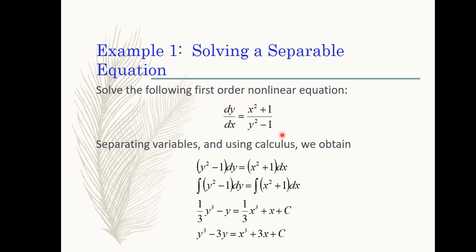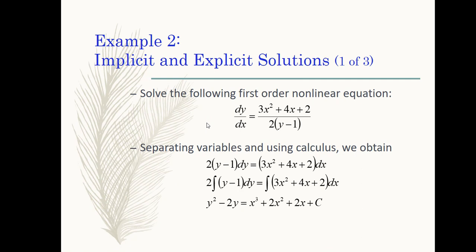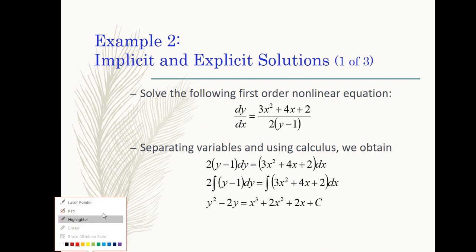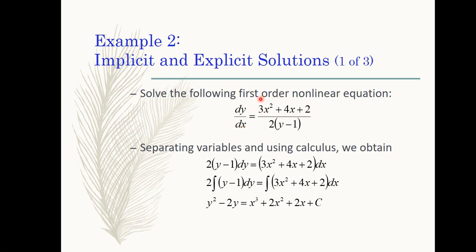The second example will not only give you another way of attacking a first-order separable differential equation, but also will present the concept of the implicit and the explicit solution. This DE has a form similar to the first one shown. We want the differential of x to go with the x expression and the differential of y to go with the y expression, which cross multiplication will accomplish. We have successfully separated variables because dy is grouped with the y expression and dx is grouped with the x expression only — no mix of variables x and y on these two differentials.